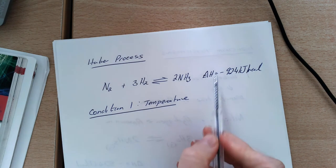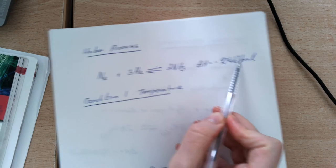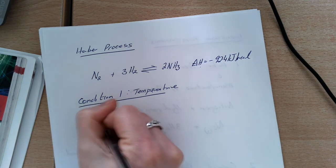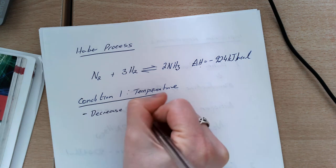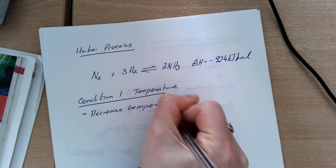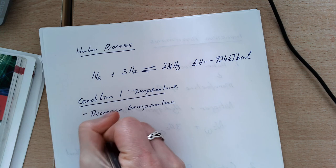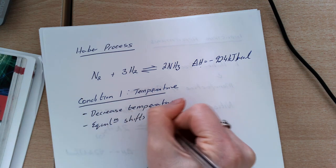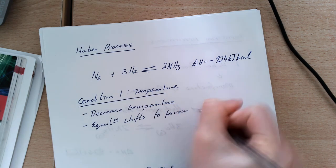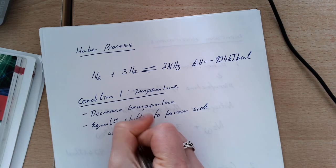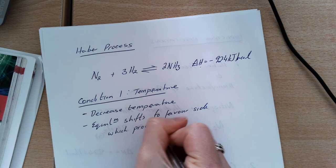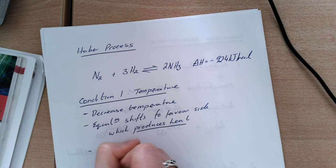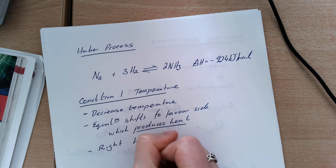If I look at the temperature, my forward reaction is exothermic. In order to favor the exothermic side, which produces heat, I need to decrease the temperature. We have a big problem with this though. Decreasing my temperature causes equilibrium to shift to favor the side which produces heat. The side which produces heat, and you have to be able to explain this, is the right-hand side.